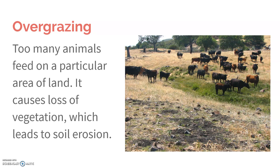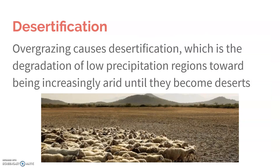A big issue with free-range grazing is overgrazing, which occurs when too many animals feed on a particular area of land and cause loss of vegetation. Any time you lose vegetation you get soil erosion, because the roots aren't holding the soil, making it loose and vulnerable. Over time, overgrazing can cause desertification — where an area degrades past the point of sustaining vegetation and becomes essentially a desert.